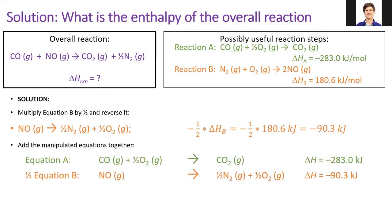Next, I see that if I add my manipulated reaction B to regular reaction A, then the unwanted O2 will cancel on both sides and the final result will be my target equation. The last step is to add the enthalpy pieces together. When I do this, I get negative 373.3 kilojoules per mole.